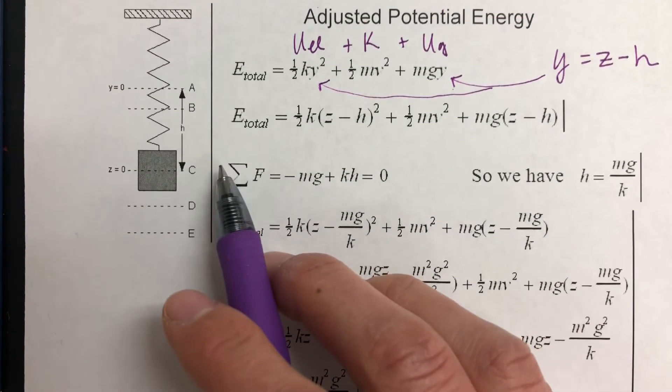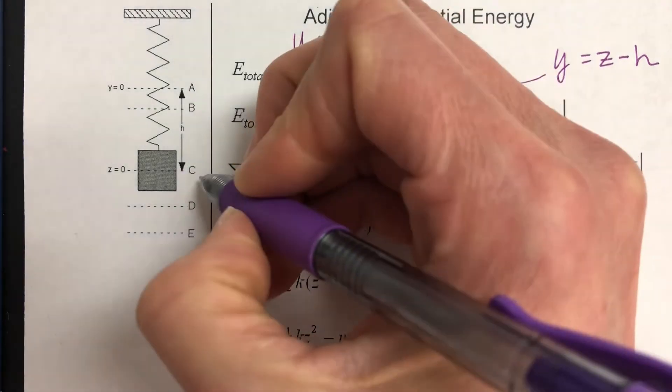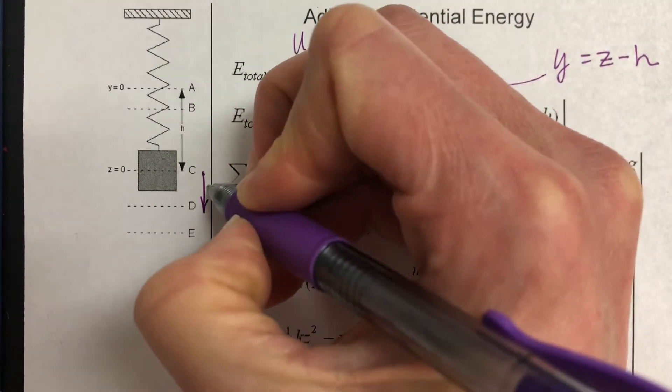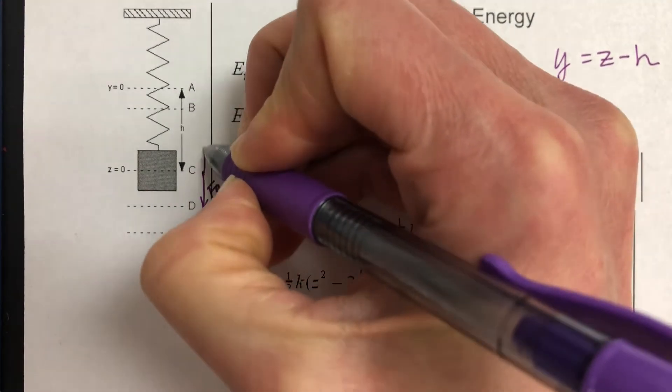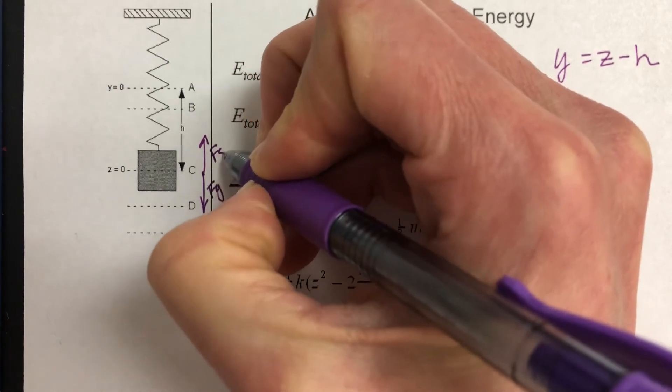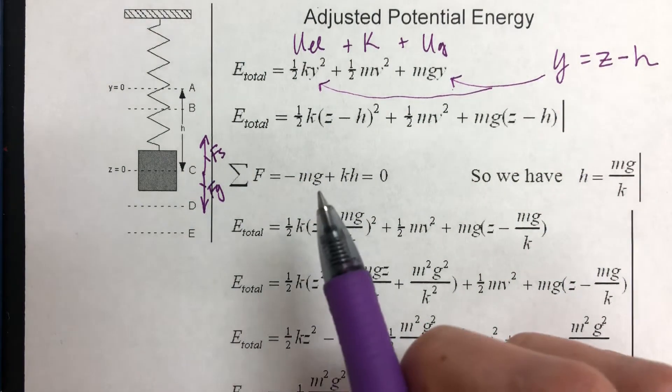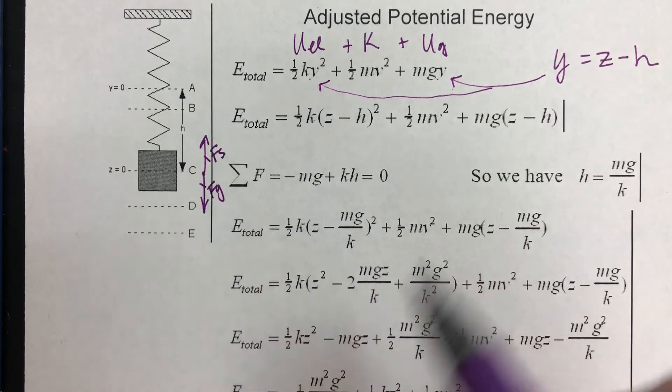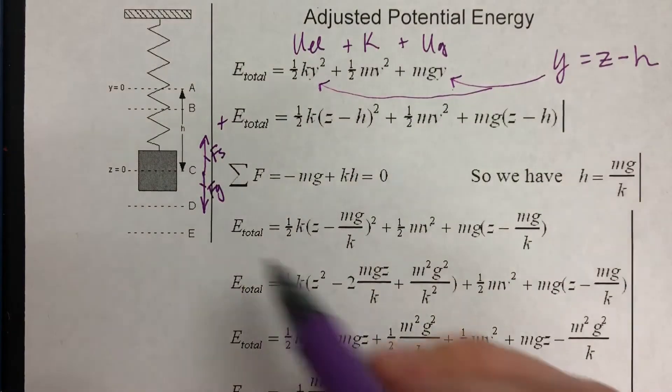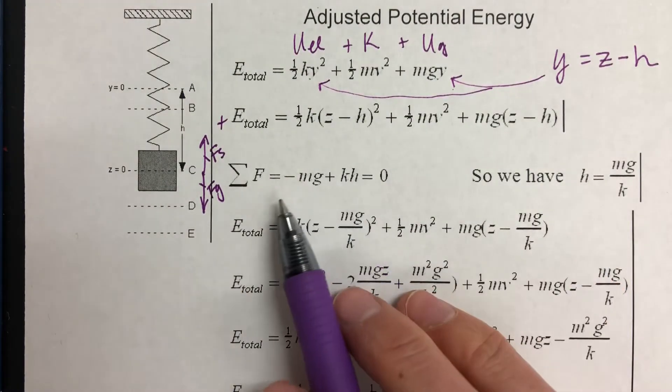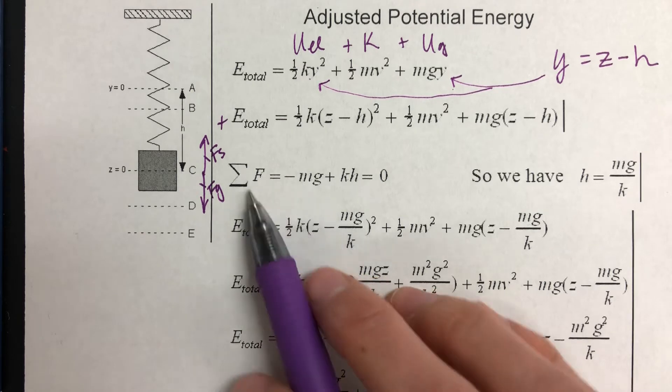Now we can think about the mass when it's in its equilibrium position. The force of gravity acting down is equal to the spring force acting up. These are balancing each other. It's in its equilibrium position. So we can write a net force equation where if we choose up as positive,